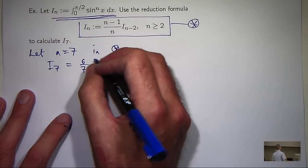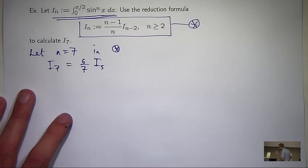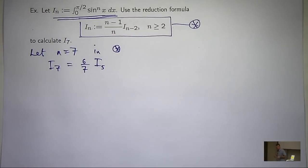So we can keep on applying that until we get down to something simple that's very easy to integrate. So let's go up here with n equals 5. It's going to be 4 on 5 times I sub 3.